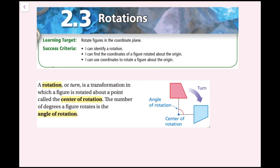A rotation, or turn, is a transformation in which a figure is rotated about a point called the center of rotation. The number of degrees a figure rotates is the angle of rotation.